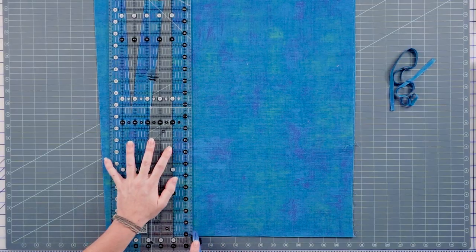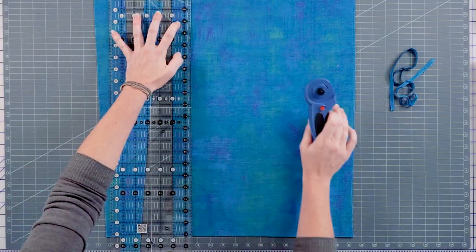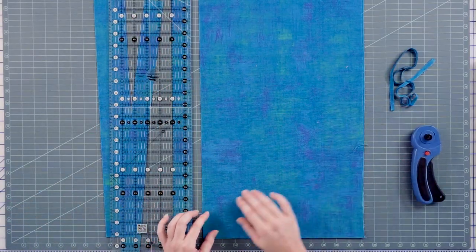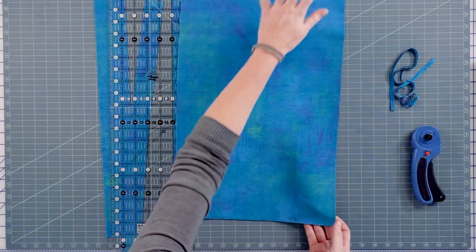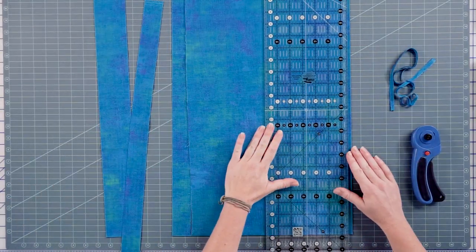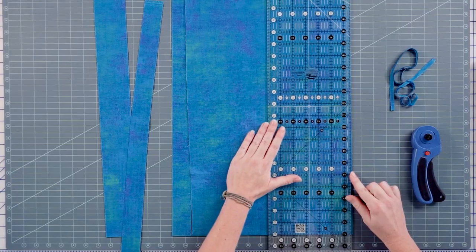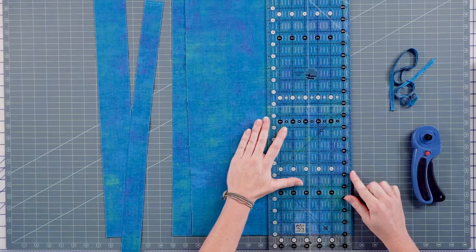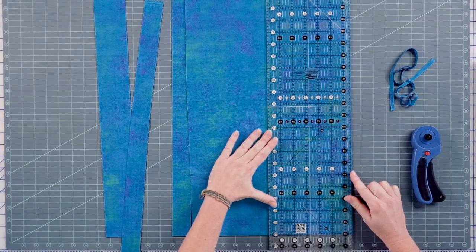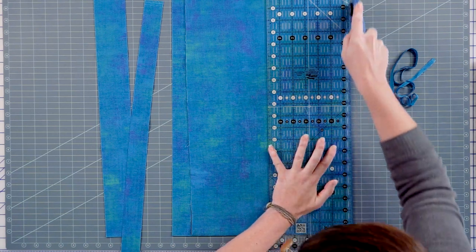About every three strips, you want to make sure that you're still on the 90 degree angle. So I'm just going to turn it over and I'm going to lay my ruler down here. My horizontal line, I want to see, have I gotten off anywhere? And I want to see if it matches.